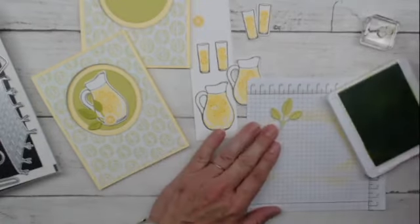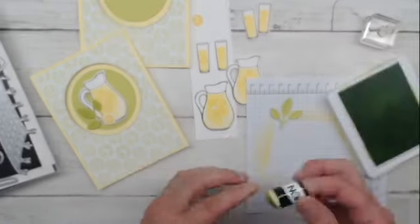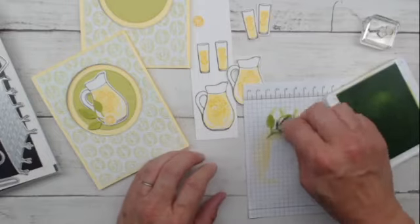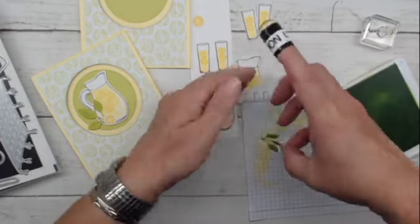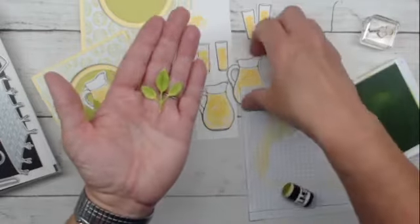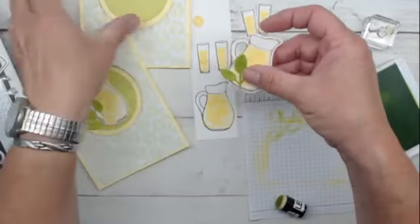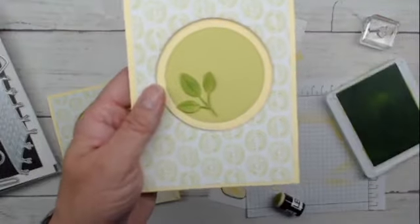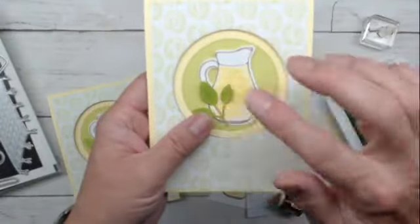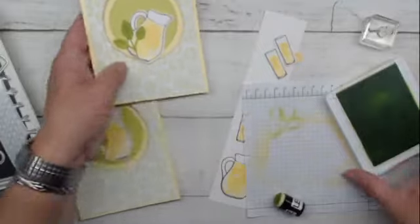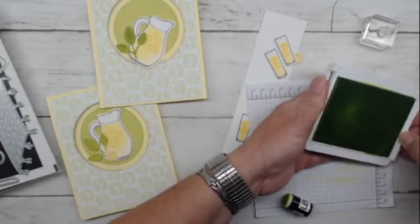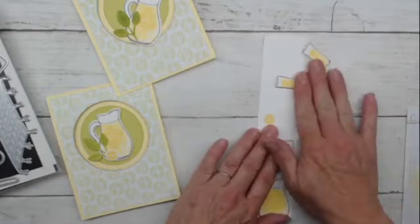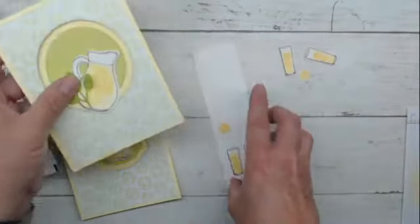So I brought in a sponge dauber and some lemon lime ink. And I just daubed the ink on here to darken it down. And once it's a lot darker, it just shows up so much better when we put all this together. So it's a much darker green on that green. So this was tone on tone cardstock before. Now it has just a little bit something extra to help it stand out a little bit.